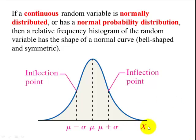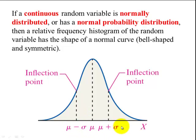Here's an example. This is our random variable x. We see the center is the mean. The points of inflection are mu minus sigma and mu plus sigma. So these are the two determining factors for any normal distribution — we need to know its mean and its standard deviation, sigma.